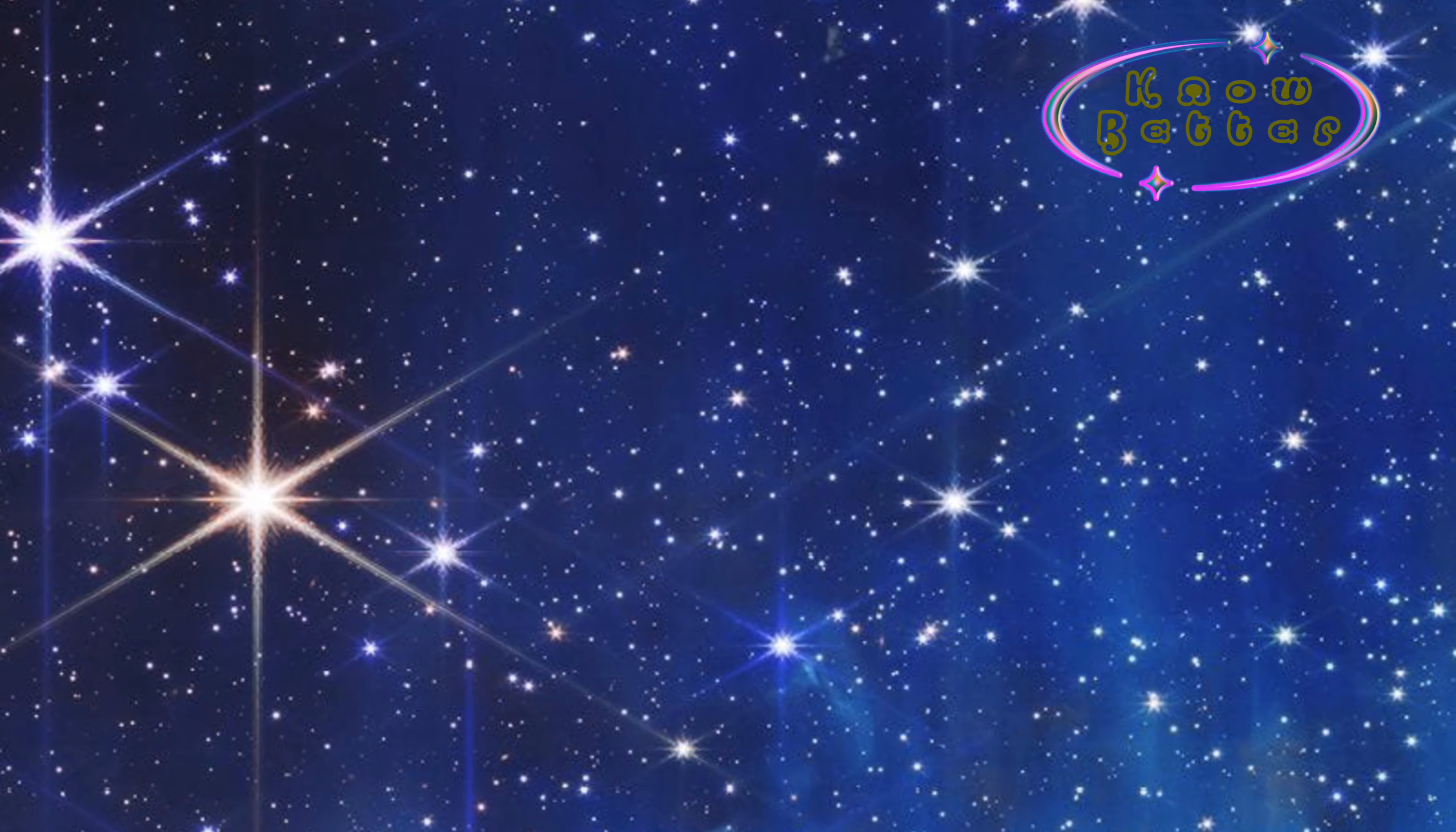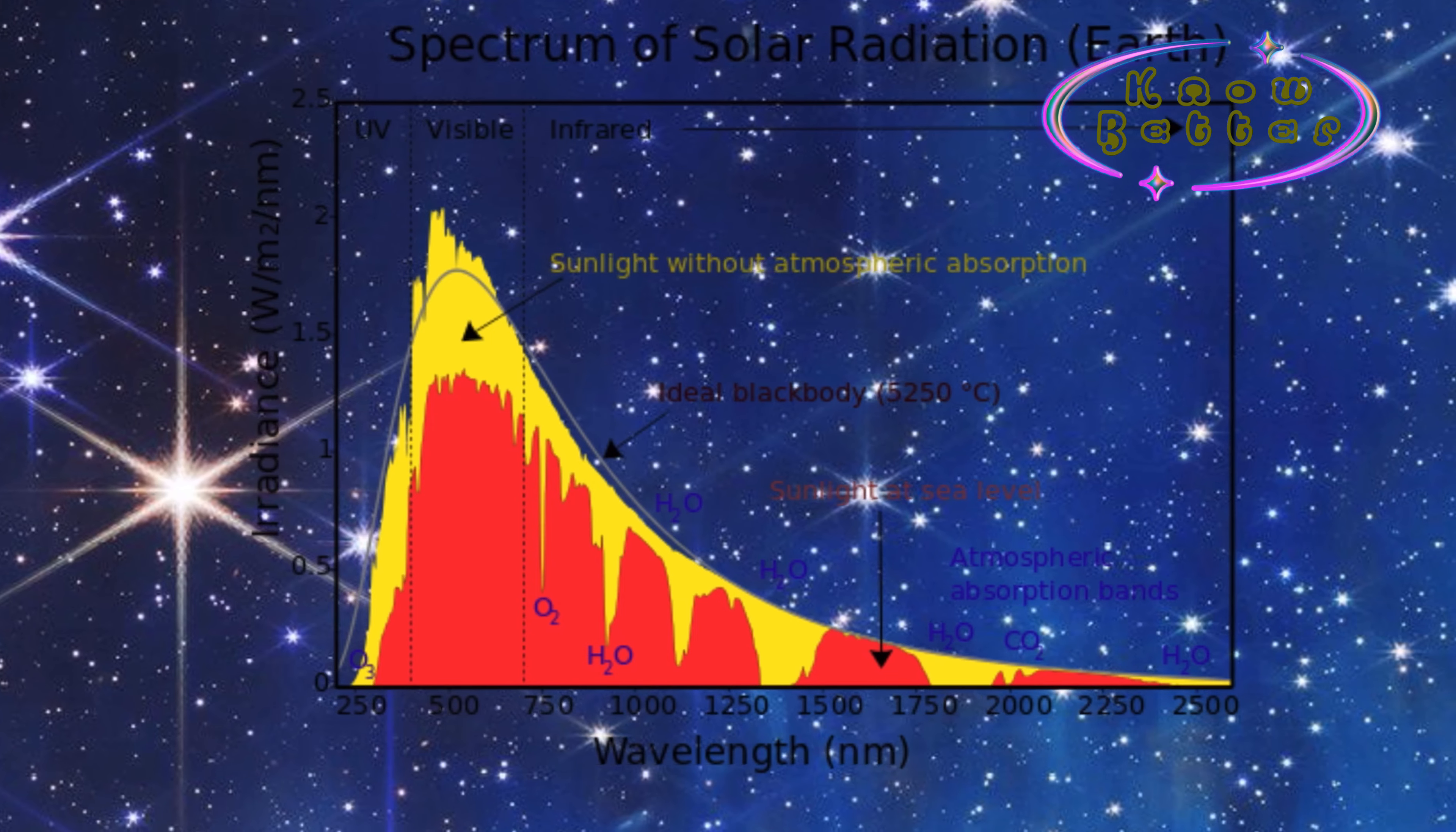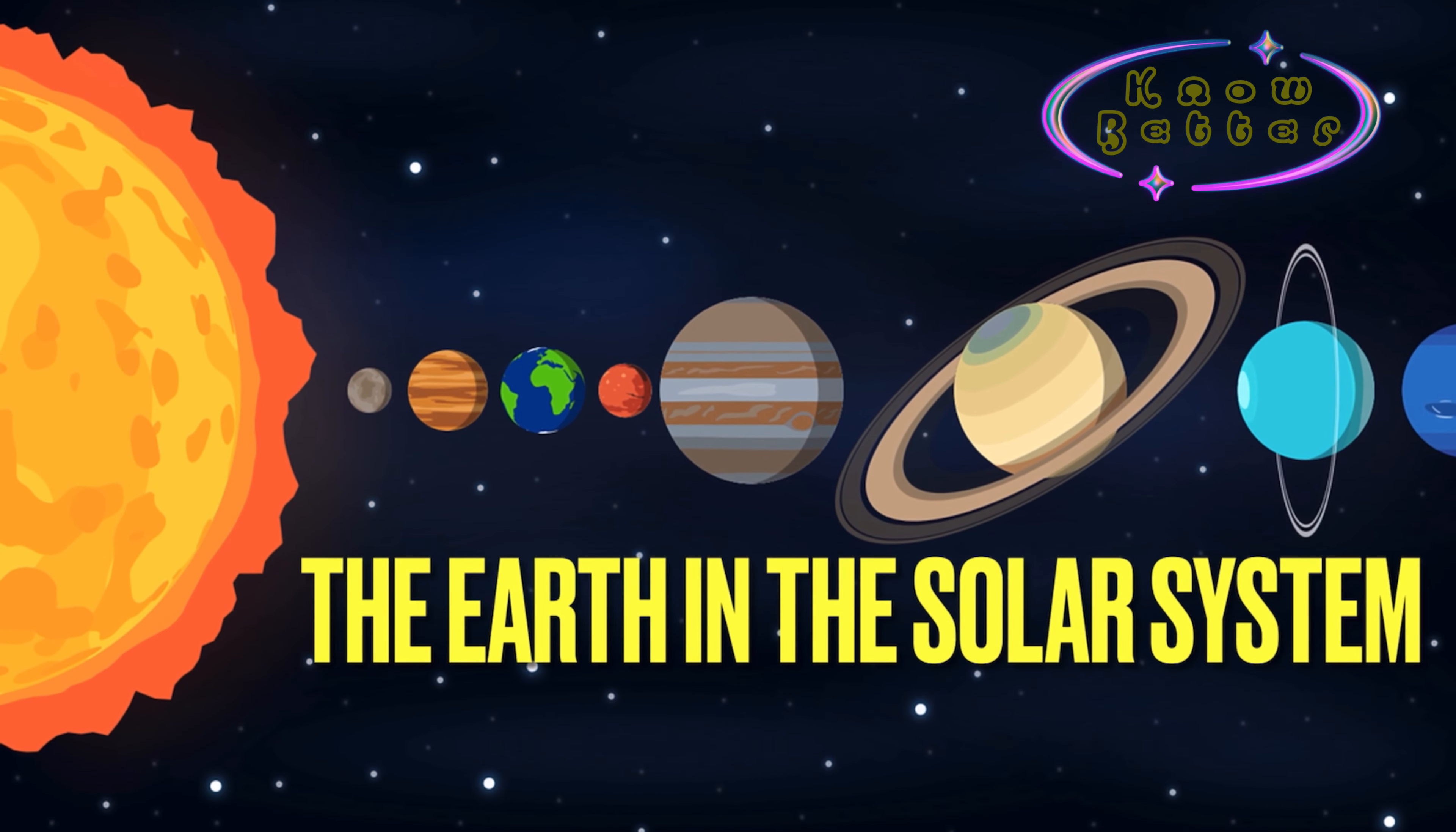How do we know what is inside the Sun? There's something called spectrum analysis by which we know what is burning in any distant object. We will discuss spectrum analysis in another video.